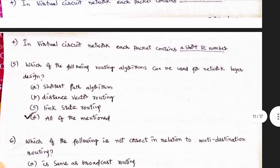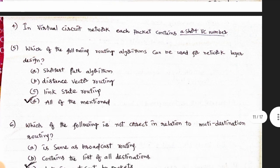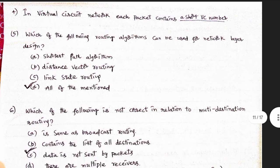Third one: use. Fourth one: In a virtual circuit network, each packet contains a short VCA number. Fifth one: Which of the following routing algorithms can be used for network layer design? Shortest path algorithm, distance vector routing, link state routing.